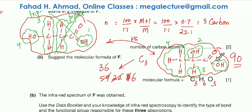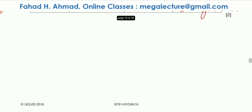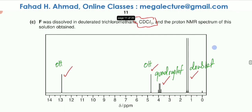So only the second isomer remains. The O-H groups give singlets. The CH has three neighboring hydrogens — that gives a quadruplet by the n+1 rule. The CH₃ has one neighboring hydrogen — that gives a doublet. This isomer perfectly matches the observed splitting pattern, so this is the correct structure of F.